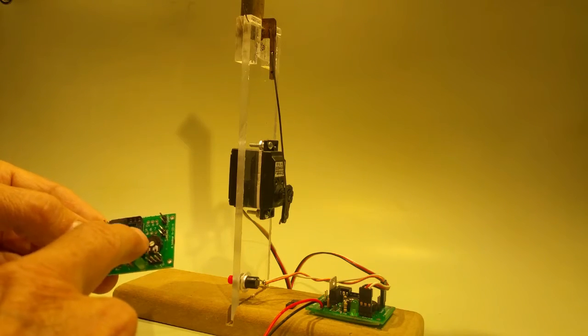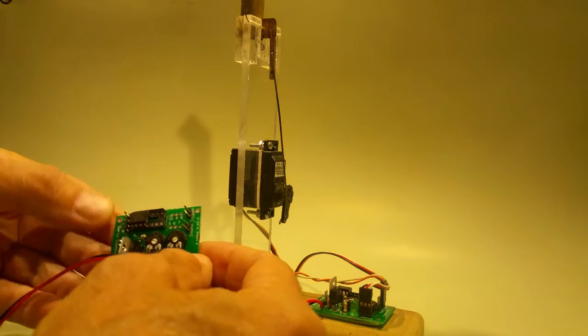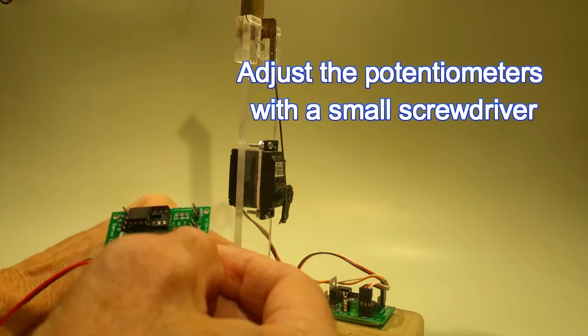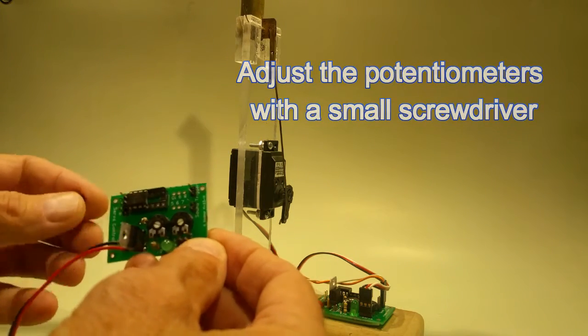First of all, there are two potentiometers, one here and one here, that are used to adjust the position of the servo motor during setup.